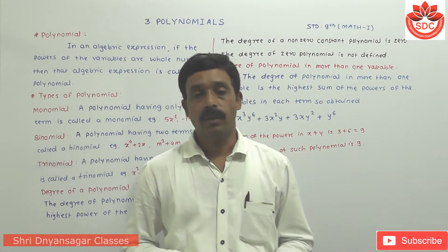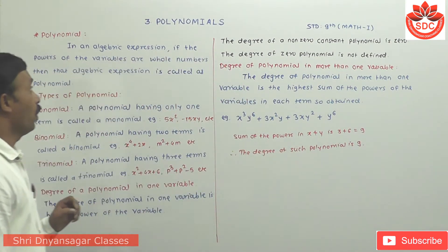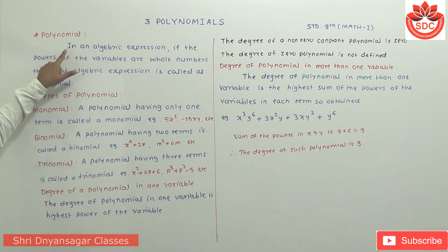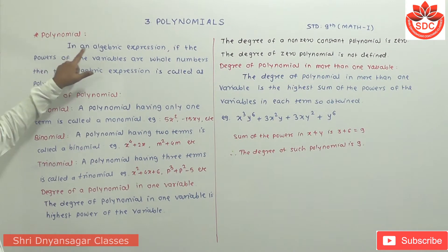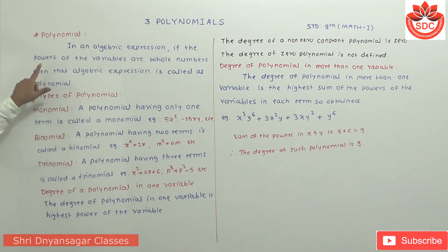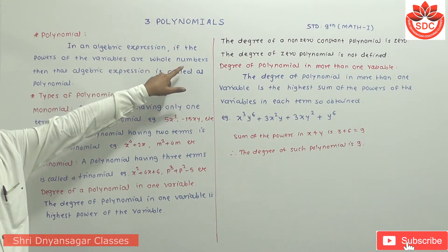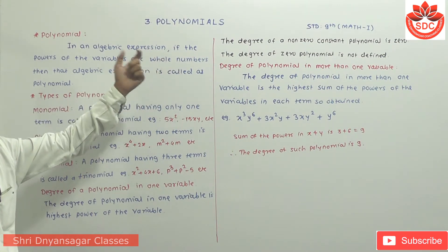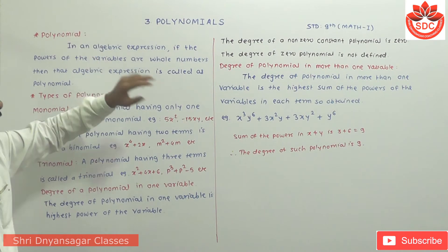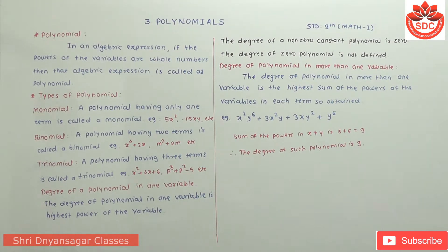What is meant by polynomial? The polynomial means it is an algebraic expression. If the powers of the variables are whole numbers — meaning 0, 1, 2, 3, 4, 5, etc. — then that algebraic expression is called as the polynomial.